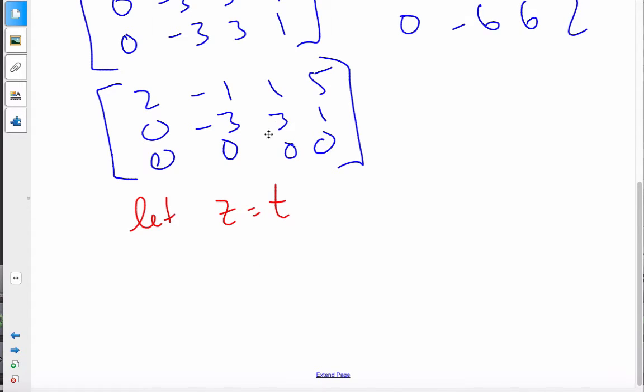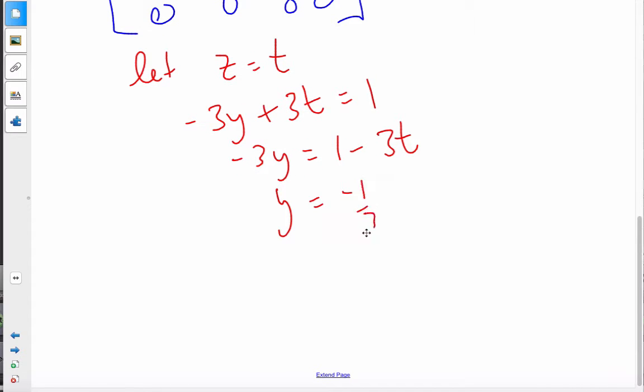So then substituting back in, it says minus 3y plus 3t is equal to 1. Minus 3y is equal to 1 minus 3t. And so y is equal to negative 1 third plus t.